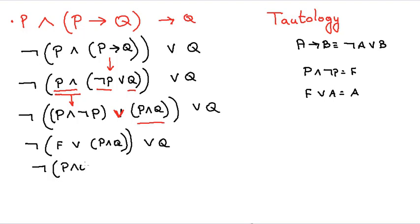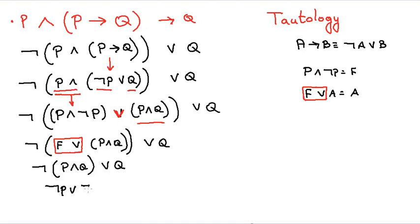So it becomes P AND Q OR Q. We removed that false term — we don't need it anymore. So we are left with NOT P AND Q OR Q. This is where we apply De Morgan's law. We take the NOT inside the parenthesis: P becomes NOT P, AND becomes OR, Q becomes NOT Q. So that gives us NOT P OR NOT Q, OR Q.